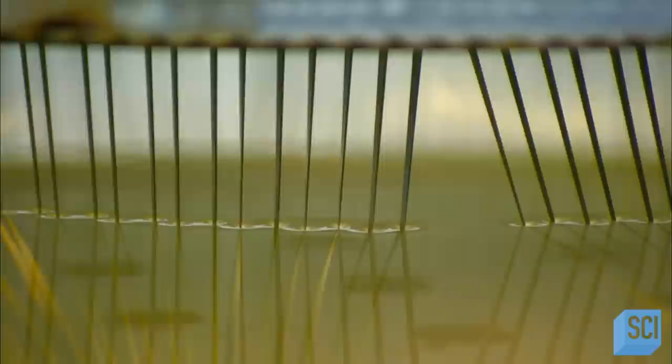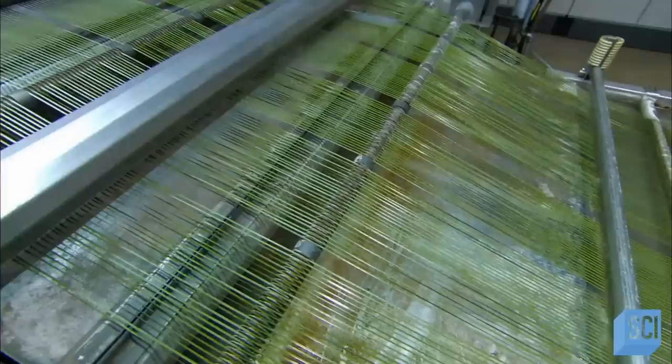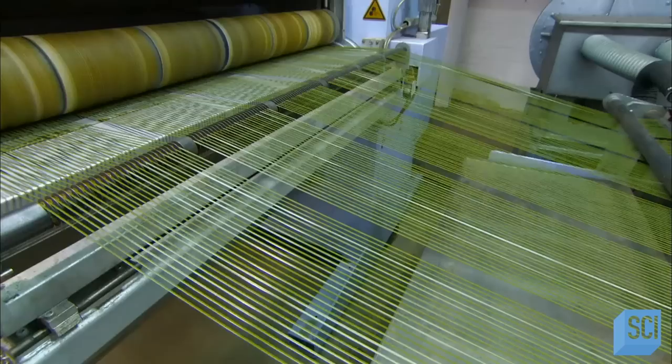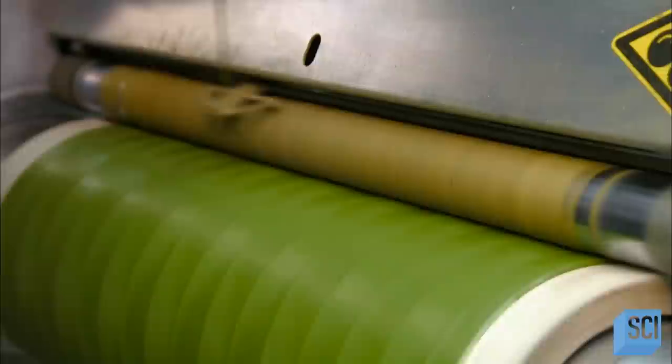The strands exit through a trough of water, which cools and solidifies them. Machinery pulls the strands through an enormous comb to keep them separated as they head to the next station. Here, rollers stretch the strands until they become as thin as real grass. The stretching also strengthens them. Spools now roll up the synthetic strands.